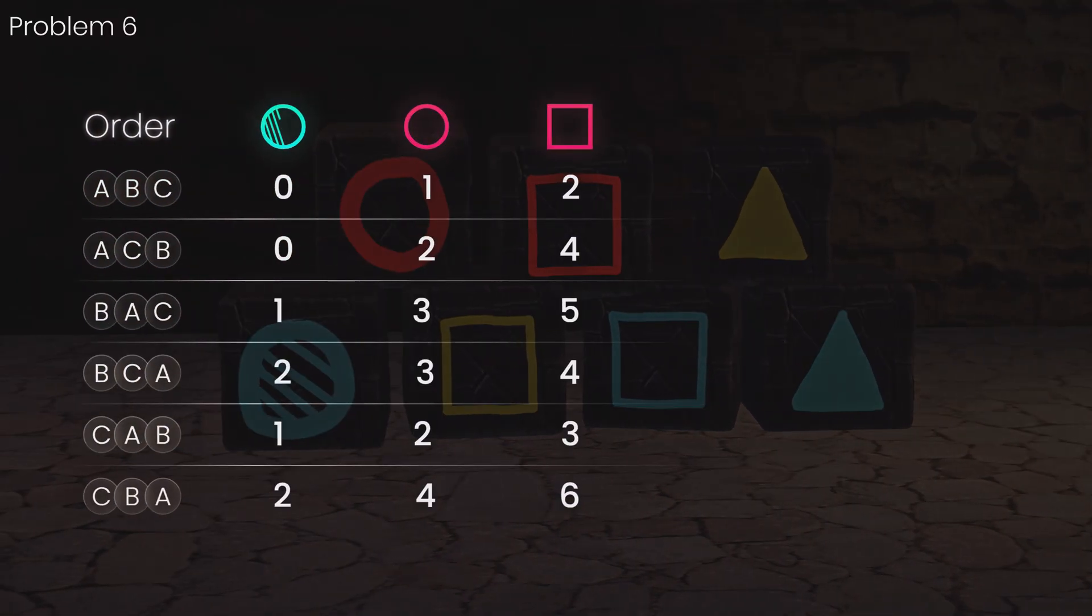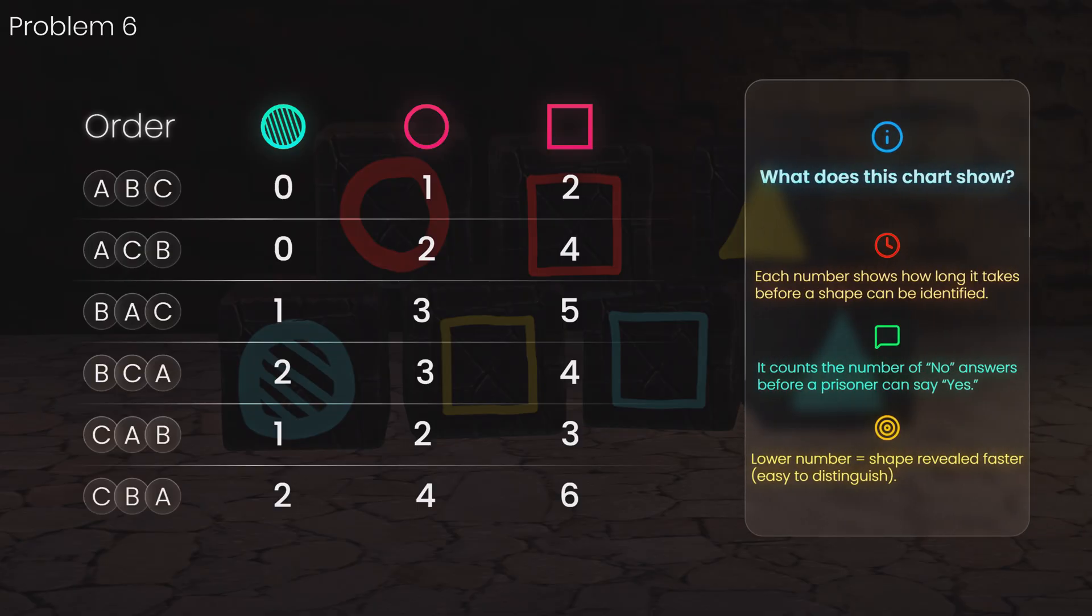For the striped circle, asking A first will immediately result in a yes, which means we should put a zero in these cells. The other cells will be filled with the number of prisoners answering before A.